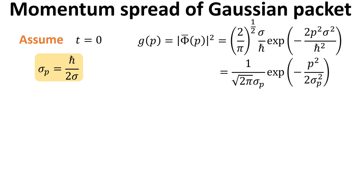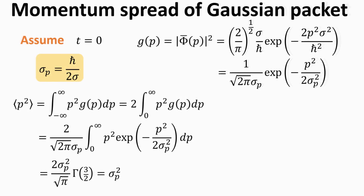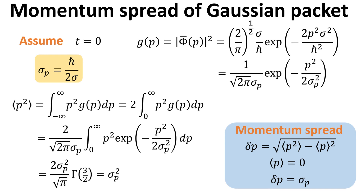Now we repeat the same exercise for the momentum spread. The probability density g(p) is given by the modulus square of the wave function, as shown. We have replaced sigma with sigma_p, as defined in the yellow box, so that the momentum probability function looks symmetrical with that of the position probability function. Similarly, we compute the mean of p squared. The math is the same as for x. You should be able to show that the mean of p squared is given by sigma_p squared. The momentum spread, defined as the square root of the difference of the mean of the square and the square of the mean, would then be sigma_p.